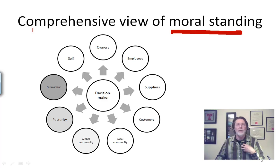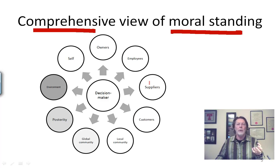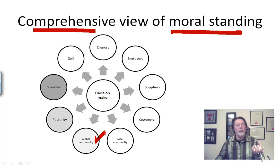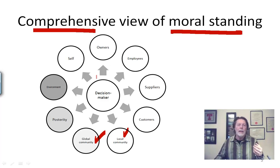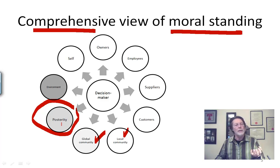In this course, we have been adopting a comprehensive view of moral standing. We've talked about our duties to the self — ethical egoism — then to owners, employees, suppliers, customers, the local community, and the global community, which we looked at in the last lecture. What is the role of a free enterprise economic system in making issues of justice for people nearby and for people far away? In this talk, I'm going to think about our duties to posterity, future generations, and the sustainability of our world and the environment more generally.